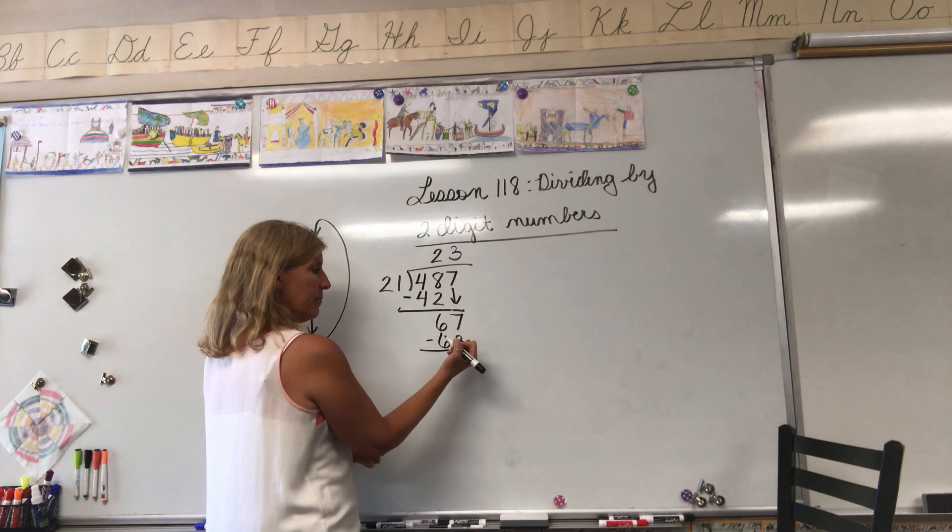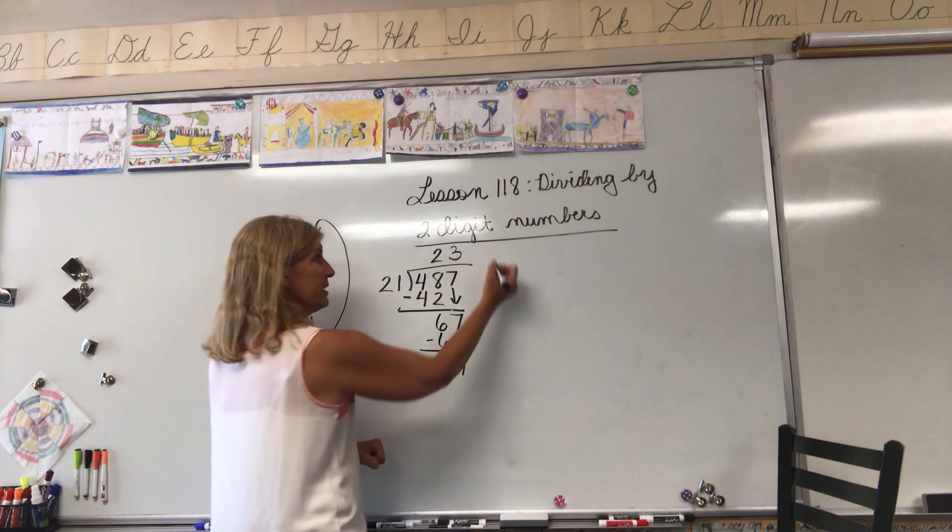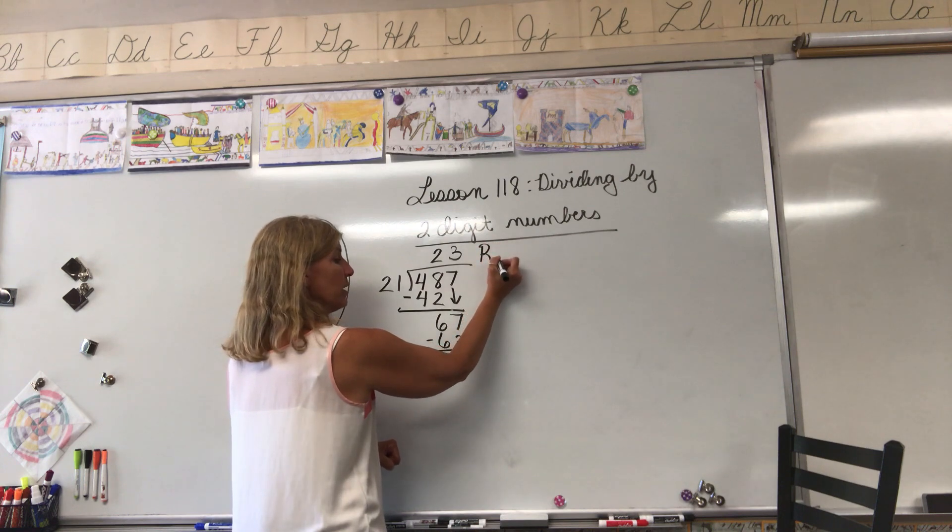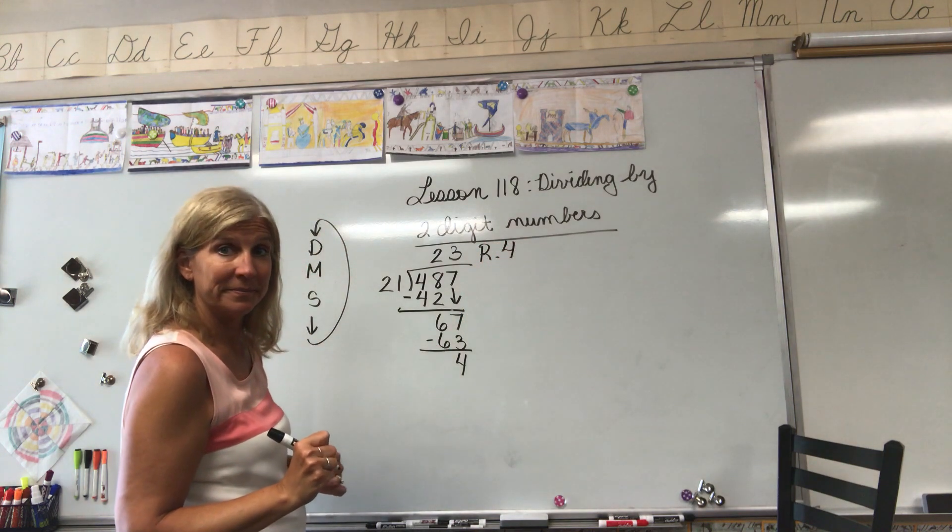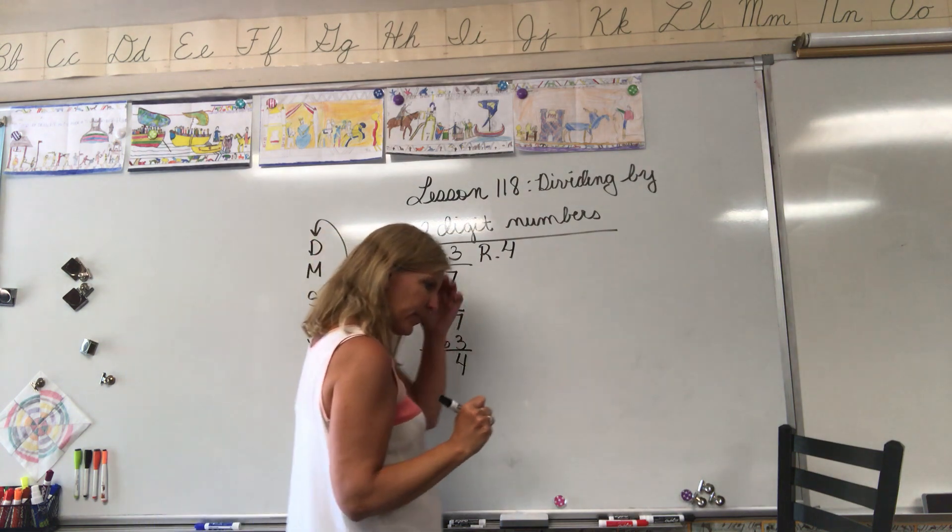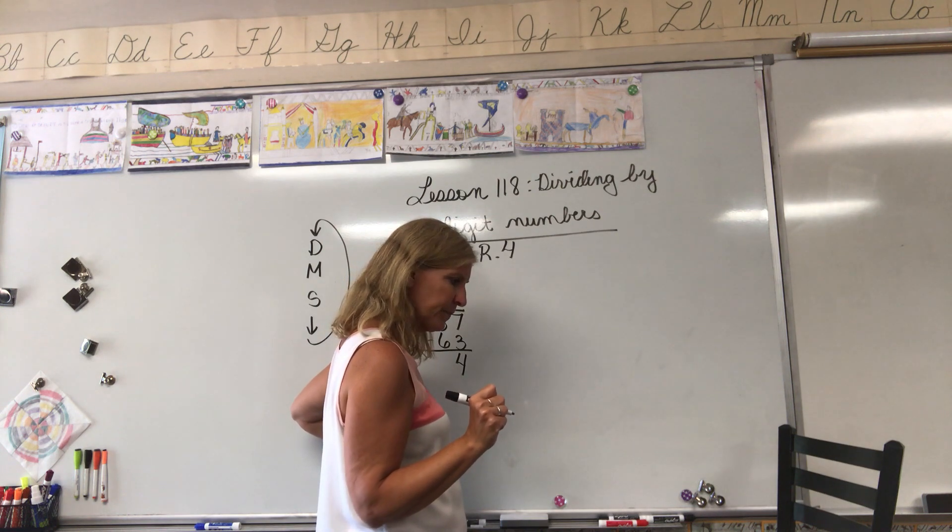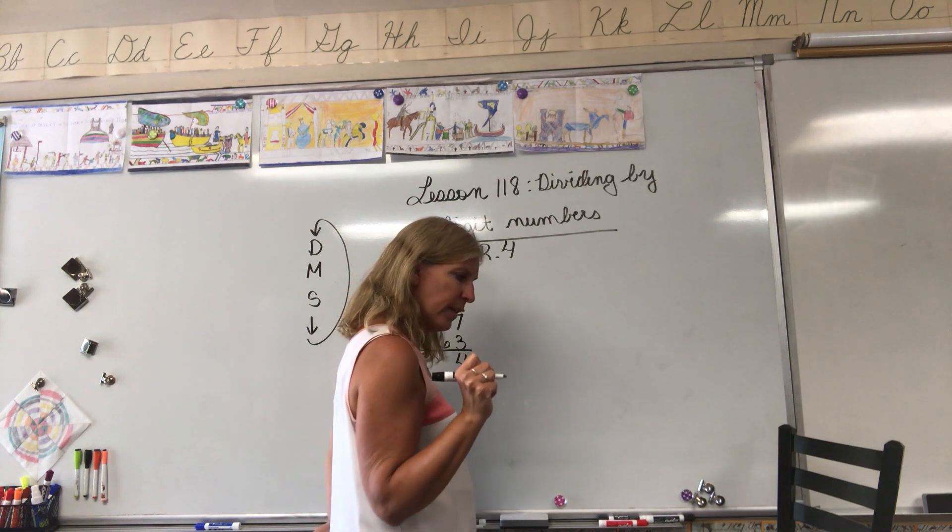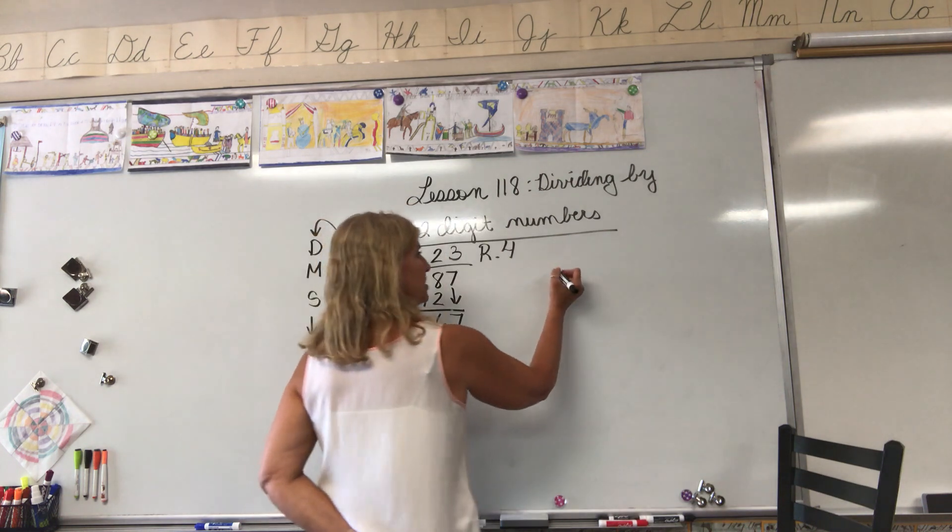7 minus 3 equals 4. There's nothing else to bring down. Our answer is 23 with a remainder of 4. All right, let's try another example. We're going to move now into the practice set. Let's do a few of our practice set. Let's do A.